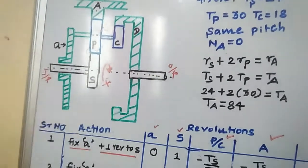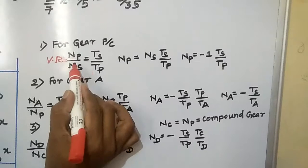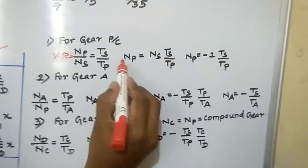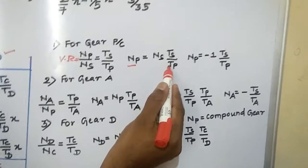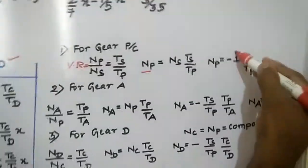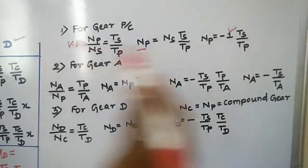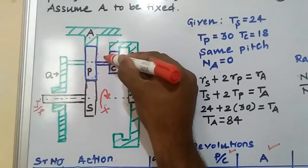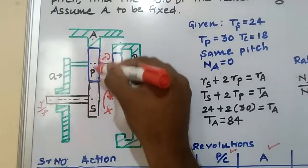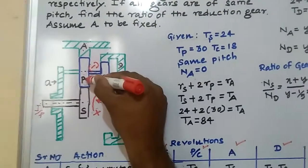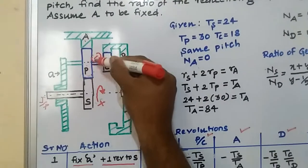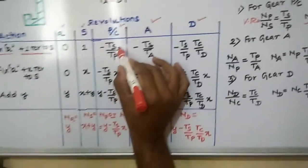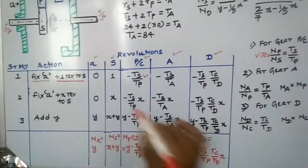Using the figure, I will go for this velocity ratio. NP/NS equals TS/TP. Rearranging, NP equals NS into TS/TP. NS is given as one revolution. I have taken a negative sign — look at the figure. I have taken the sun gear as positive, and P becomes the opposite direction, that is negative. The sun gear and planet gear form a simple gear train. Sun gear is clockwise, P is anticlockwise — that is why it comes as a negative sign. So the result is minus TS/TP.